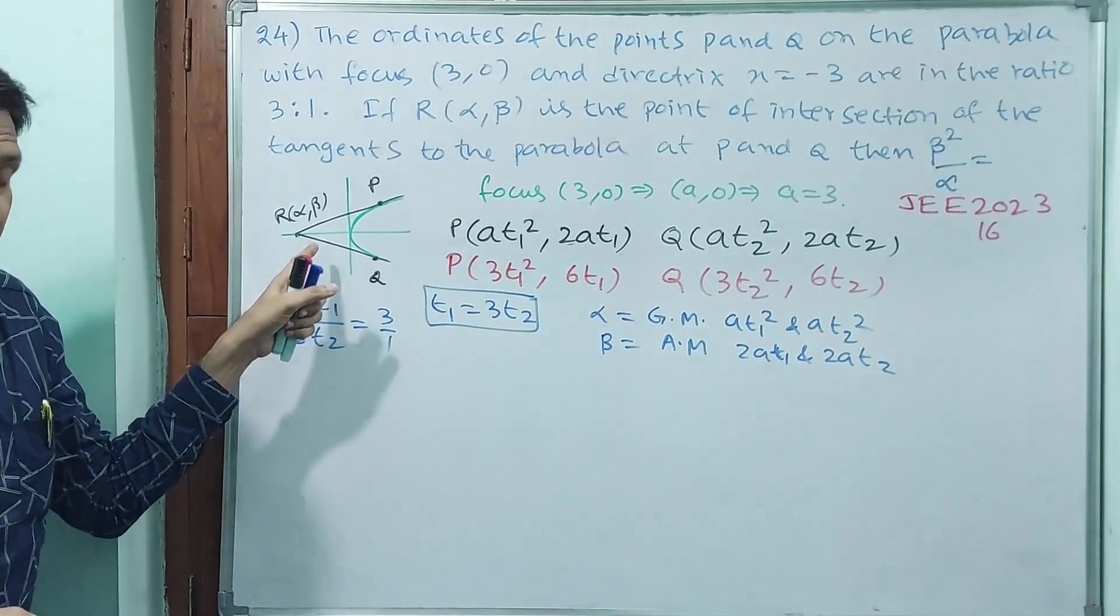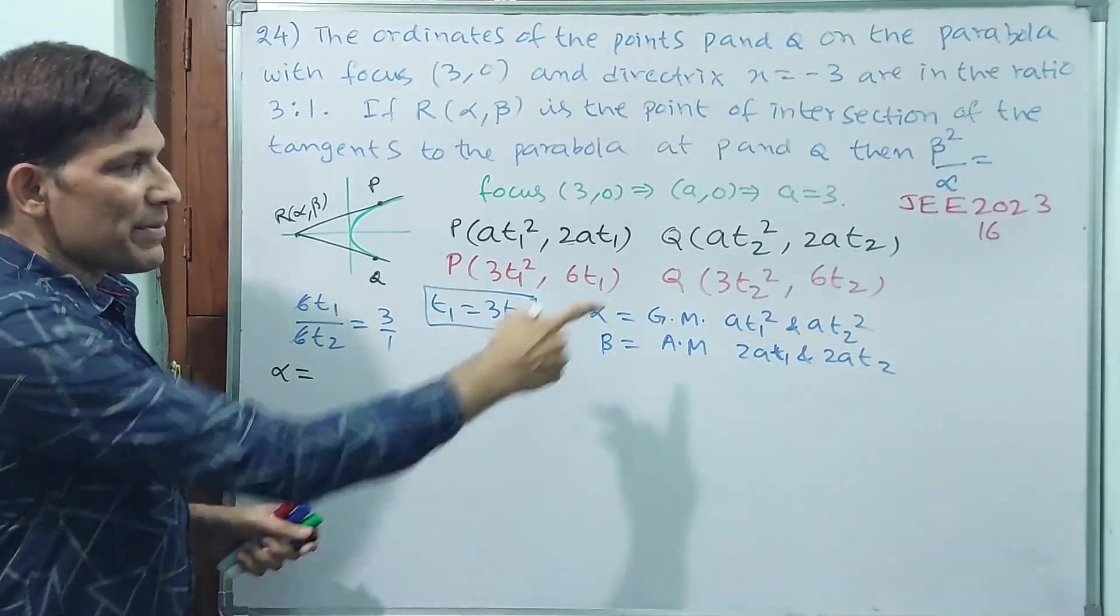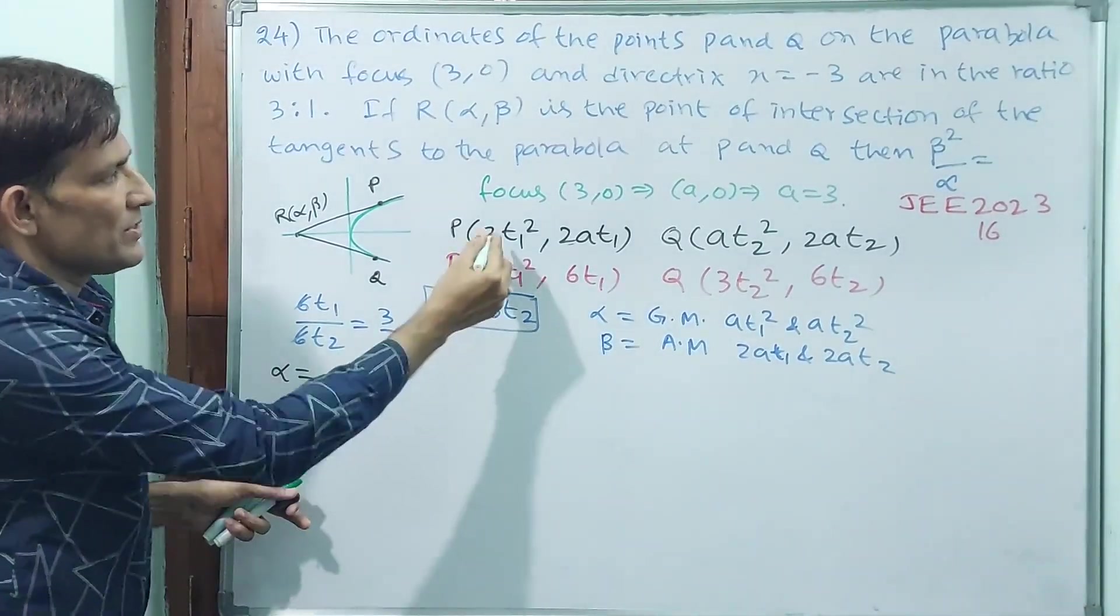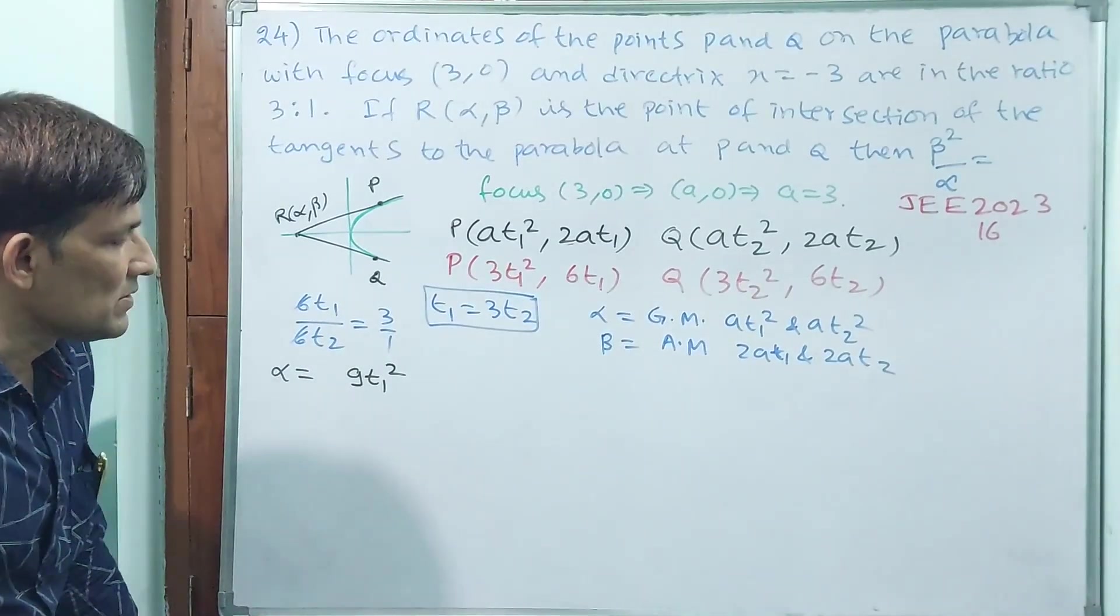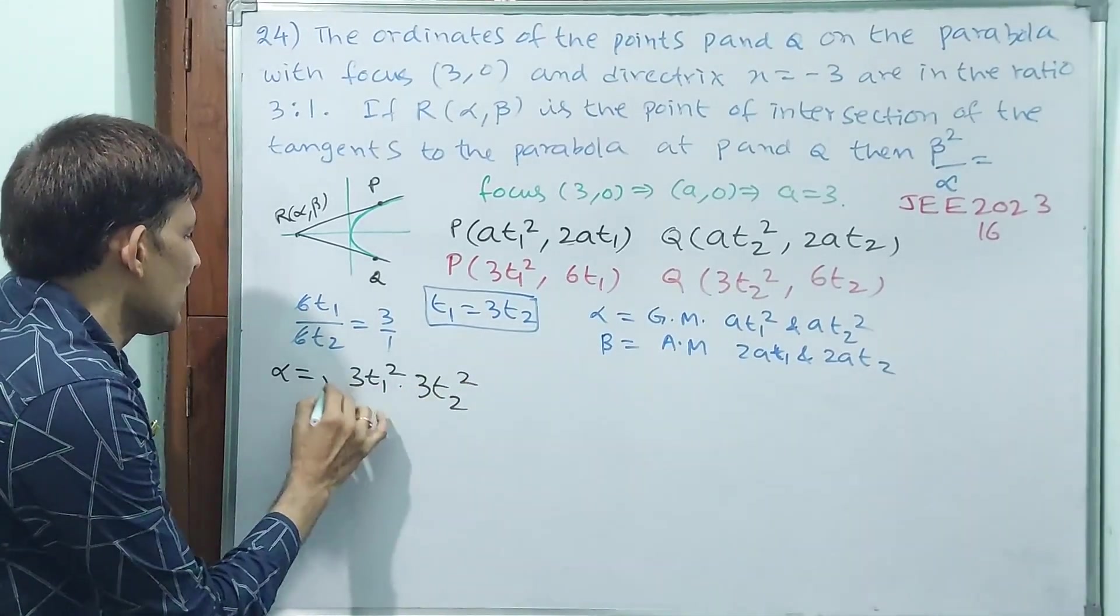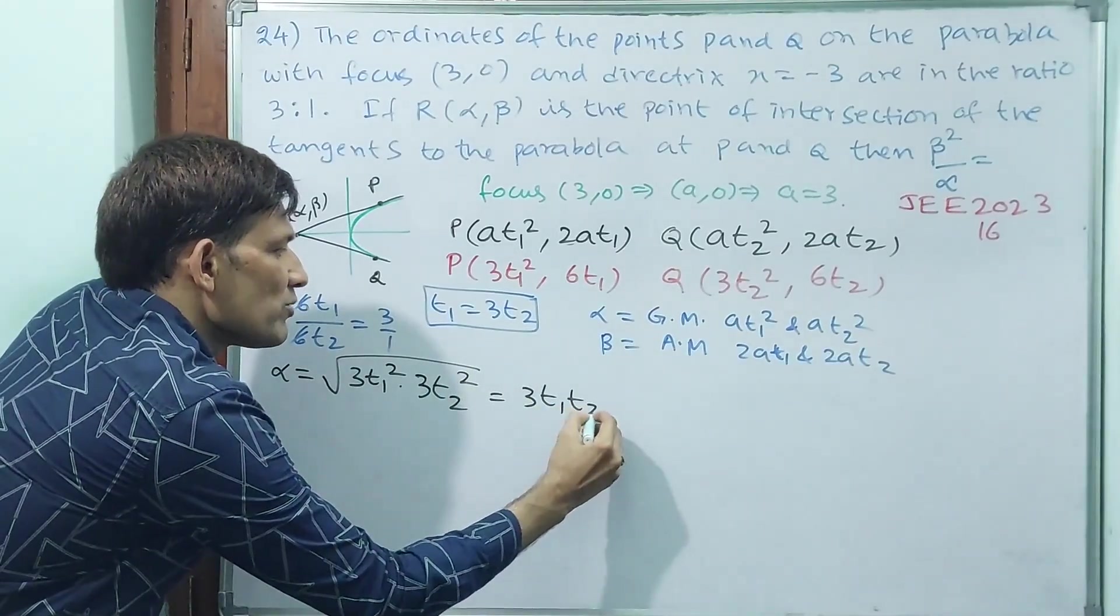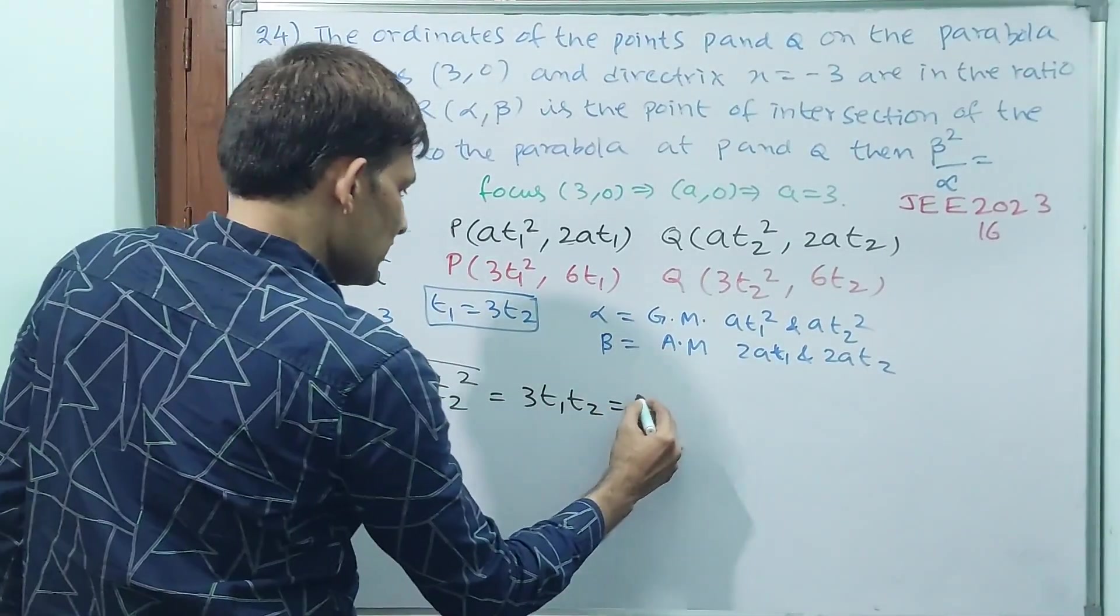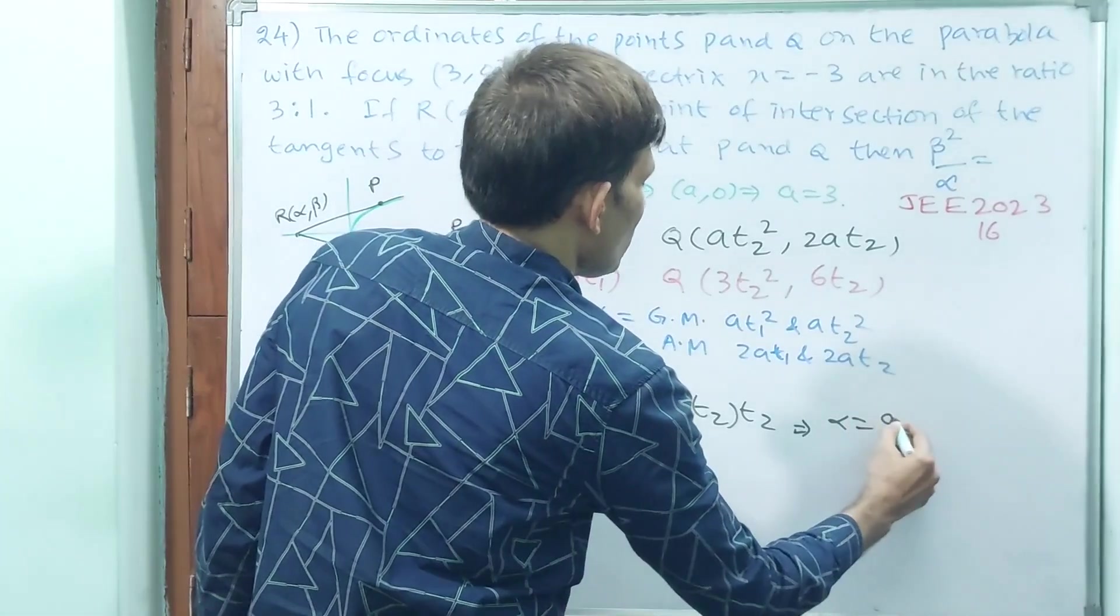Exactly, do we get any value? We don't know. We may get ratio. Let us do it. Alpha is equal to geometric mean, which is both multiplied and square root. That means √(3t₁² × 3t₂²) = 3t₁t₂. Alpha is equal to 3t₁t₂. t₁ is equal to 3t₂. That means 3 × 3t₂ × t₂ = 9t₂². Alpha is equal to 9t₂².